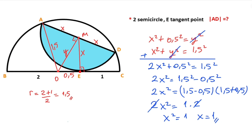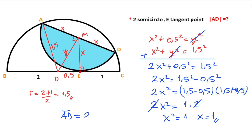You know that the length of AD equals x. Therefore the diameter of the blue semicircle is going to be 2 units.